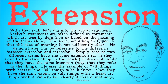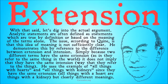With that said, let's dig into the actual argument. Analytic statements are often described as statements which are true by definition, or based on the meaning of the terms alone. The issue, according to Quine, is that this idea of meaning is not sufficiently clear. He demonstrates this by reference to the difference between extension and intension. Simply because two different terms have the same extension — as in they refer to the same thing in the world — does not imply that they have the same intension, the way that they refer to that thing in the world. He uses the example of all things with hearts and all things with kidneys: they have the same extension, but clearly have different meanings. So extension and meaning don't perfectly map onto each other.